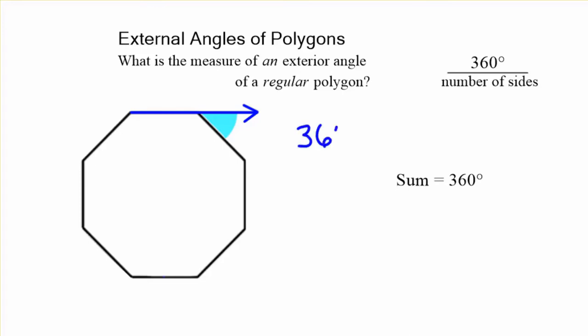So for this octagon, we take 360 degrees, divide that by 8, and we're going to get 135 degrees. Very simple. 135 right there on the exterior.